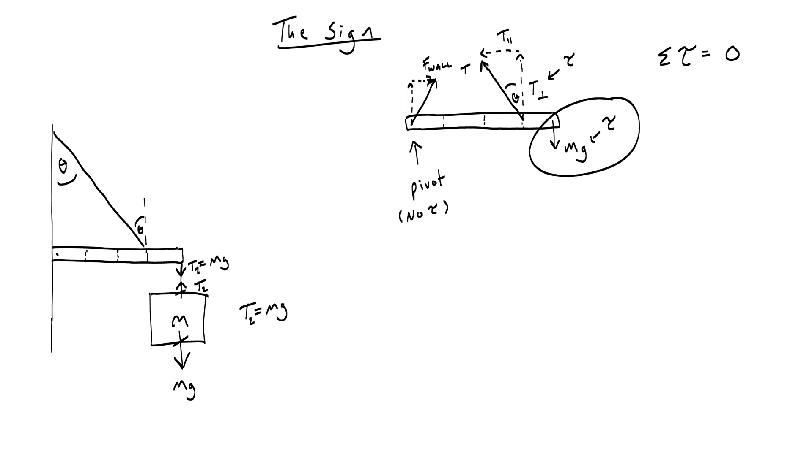So the torque that comes from this, maybe I'll call that tau one, and this one tau two, so tau one equals tau two. The torque that comes from the weight is just going to be mg times the length of the rod, because that is the radial arm, or the radial length, L. So mg times L.